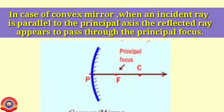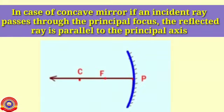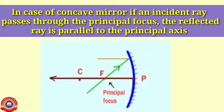In the case of a convex mirror, when an incident ray is parallel to the principal axis, the reflected ray appears to pass through the principal focus. Rule number two: in the case of a concave mirror, if an incident ray passes through the principal focus, the reflected ray is parallel to the principal axis.